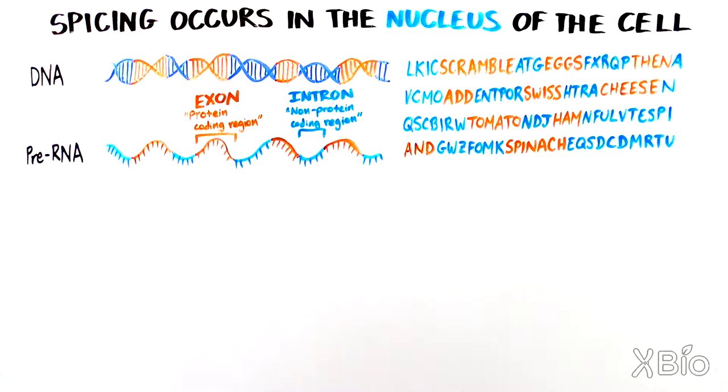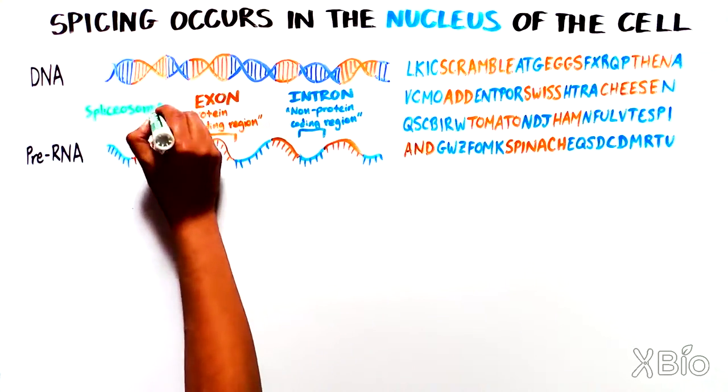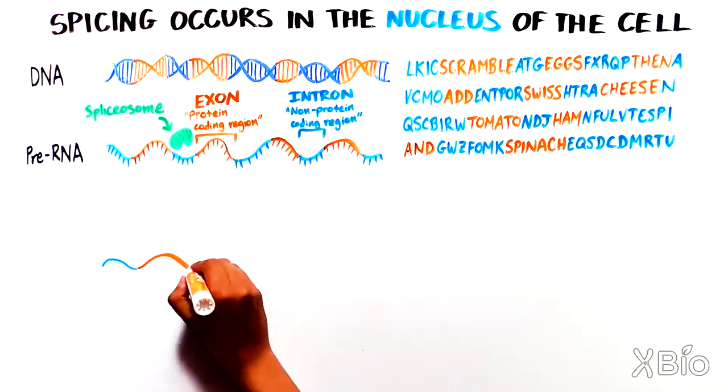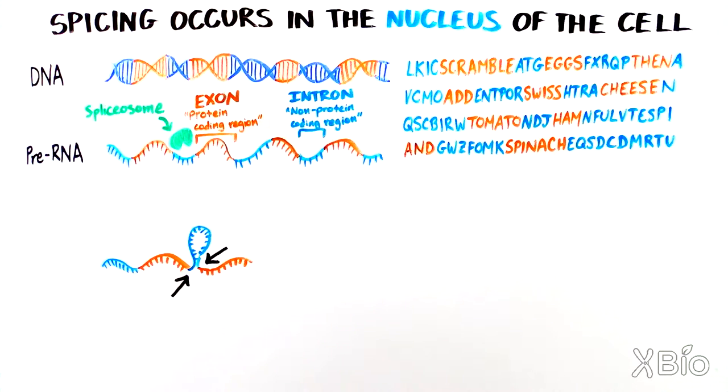The introns are removed by a large protein and RNA complex called the spliceosome, here shown between the first and second exons. On either end of the intron are particular RNA sequences which the spliceosome brings together. Then the spliceosome cuts the bases close to exon number 1, forming a loop called a lariat.